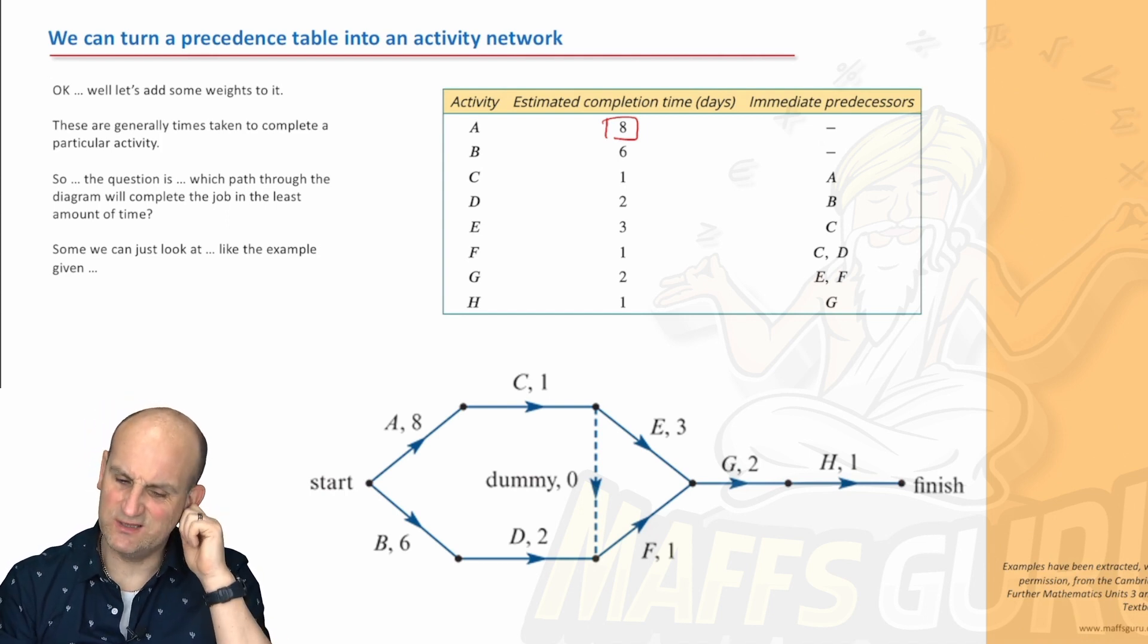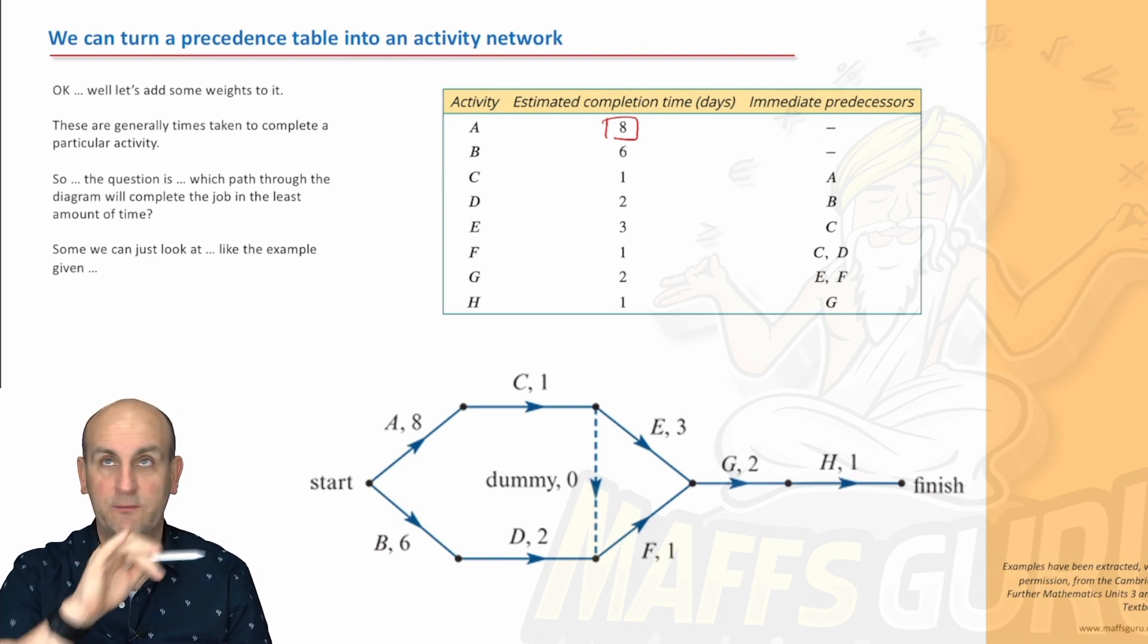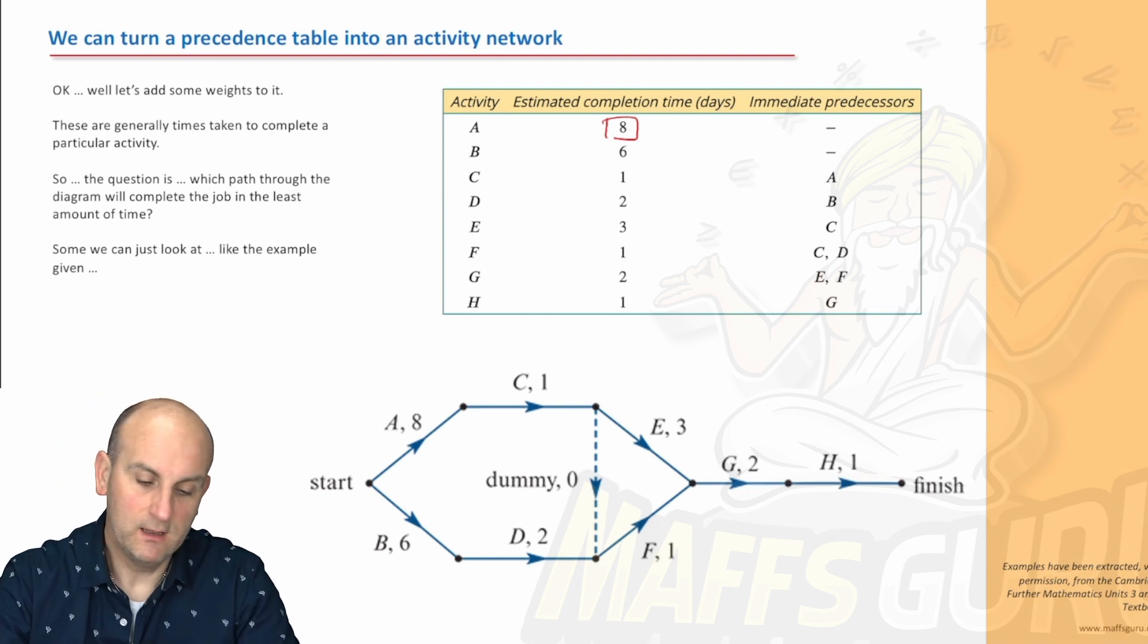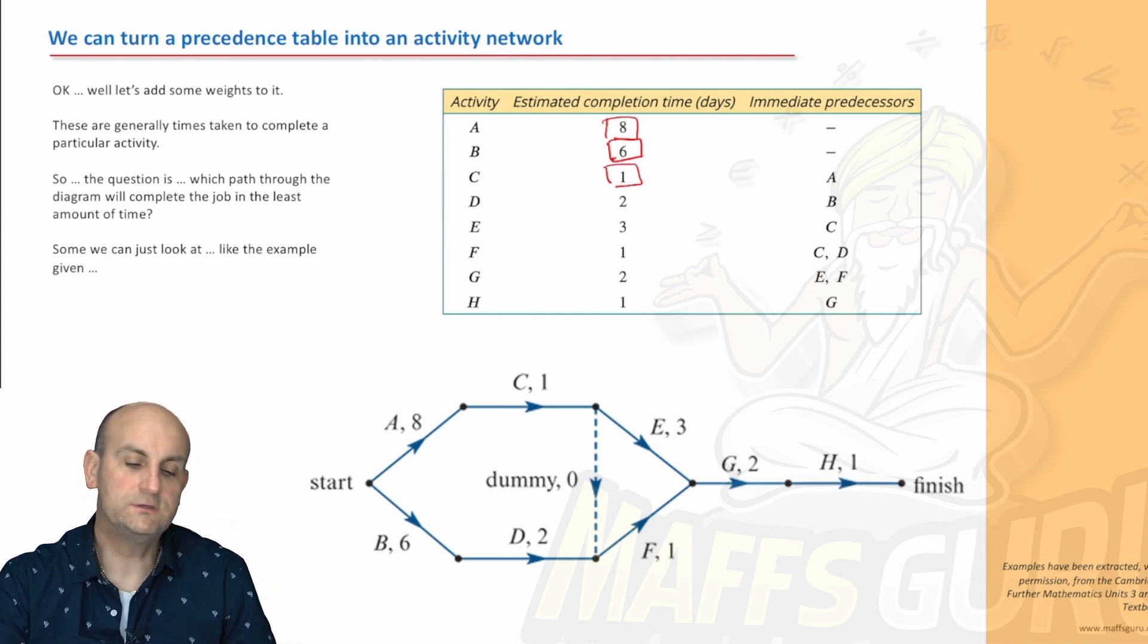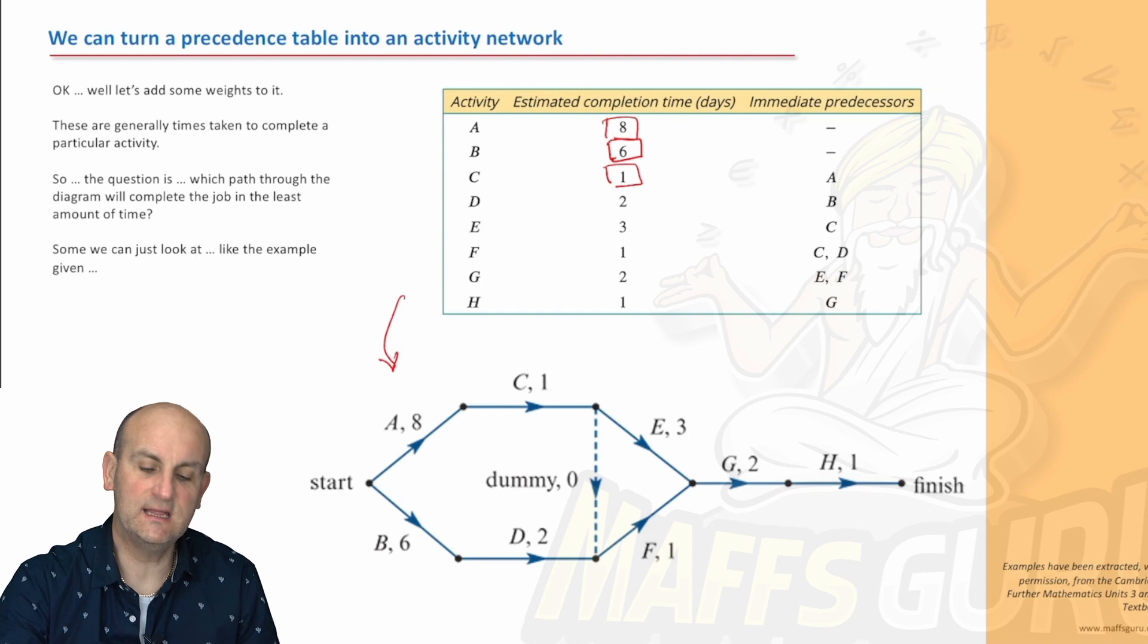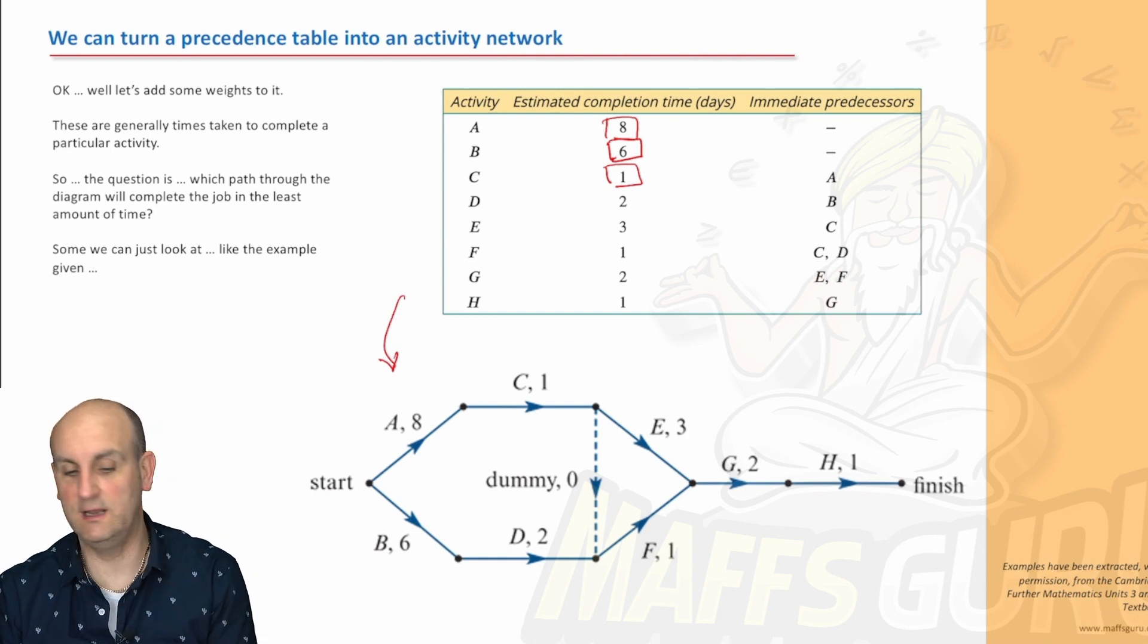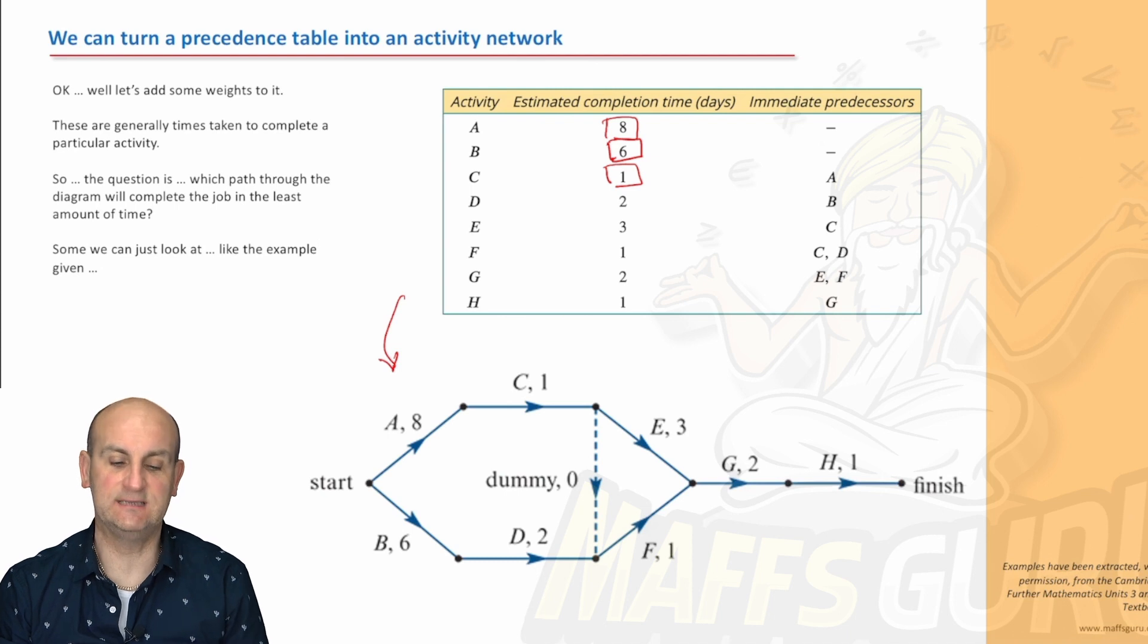Let's work out. Because actually, do you know how long it's going to take to do this whole project? No. Not at this moment in time. You might have an idea, because you might want to walk around the dummy network. But we know for B, it takes six days. For C, it takes one day. So, turning a precedence table into an activity network is really, really important. But what do we do now?